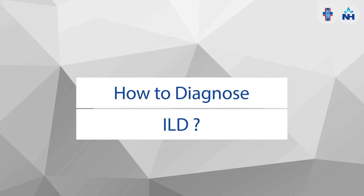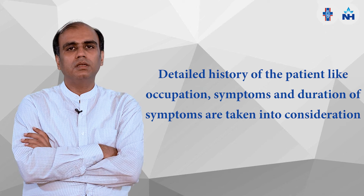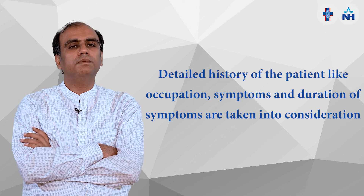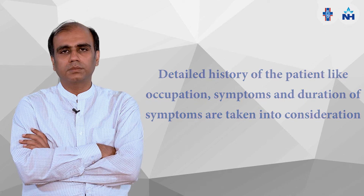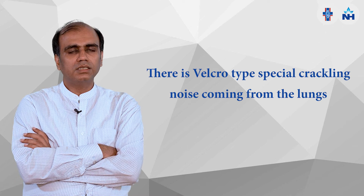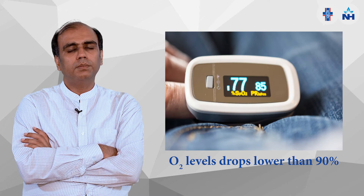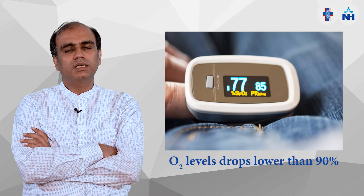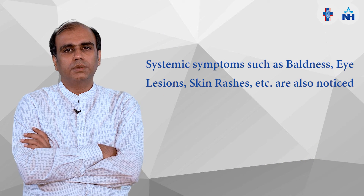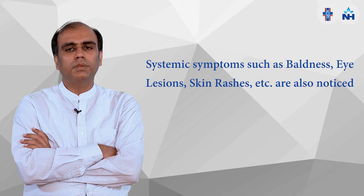How can we diagnose this? Basically, we have to take a detailed history of the patient — what is their occupation, what is the duration, and what are their symptoms. If the symptoms are suggestive of ILD, then we have to examine the patient. There is especially a crackling sound in the lungs called Velcro crepitations, and simultaneously the oxygen level may be lower — less than 90%. There may also be systemic findings such as baldness, eye lesions, and skin rashes.